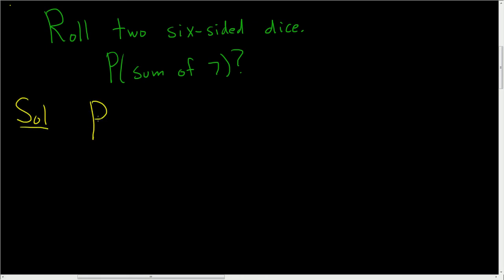Let's think about it. We want the probability that we see a sum of 7. So this is a fraction, right? In the numerator, we're going to have the number of ways to get a sum of 7.